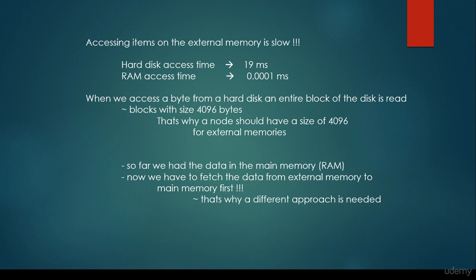When we access a byte from a hard disk, an entire block of disk is read. These are called blocks with size 4,096 bytes. So if we want to read, for example, an integer of 4 bytes from the random access memory — the main memory — then we are going to read exactly those 4 bytes. This is not the case for external memory: if we want to get an integer of 4 bytes, then the external memory is going to return approximately 4,000 bytes, because it is able to return a single block, or two blocks, or three blocks. It is not able to return just a few bytes.